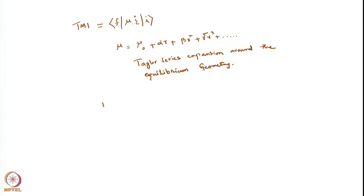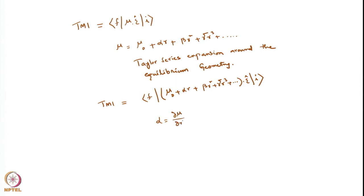Therefore, your TMI will now become ⟨f| (μ₀ + αr + βr² + γr³ + …)·ε |i⟩, where α = dμ/dr evaluated at r₀, β = (1/2) d²μ/dr² evaluated at r₀, and γ = (1/6) d³μ/dr³ evaluated at r₀. These are the coefficients, and α is the dipole moment derivative.